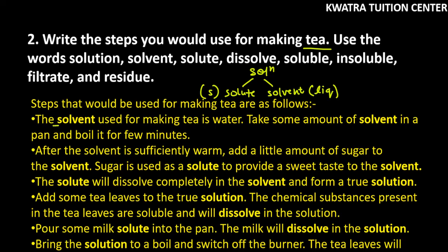First of all, we can write the solvent required for tea — it is water. The solvent used for making tea is water. Then, you have to take some amount of solvent in a pan and boil it for a few minutes. After the solvent is sufficiently warm, we need to heat it.